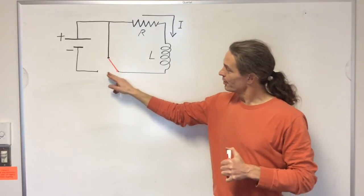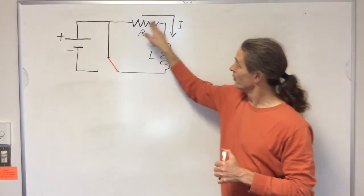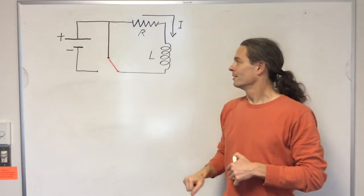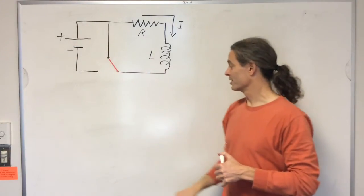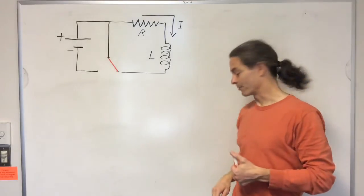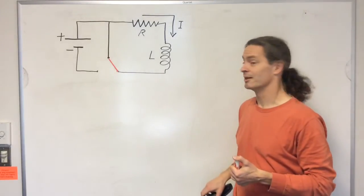So now no current can flow here. Current can only flow along this loop. So the battery has been effectively disconnected from the rest of the circuit. So we might as well get rid of it because it's just distracting us.